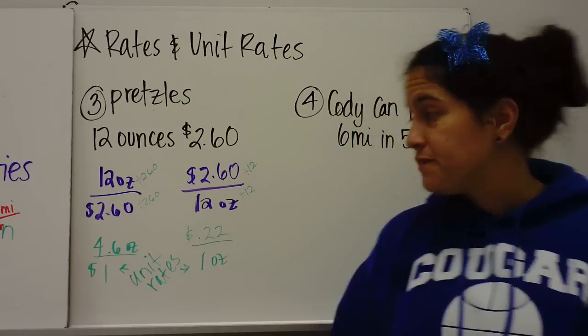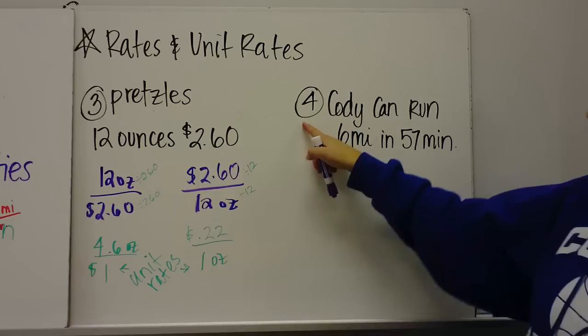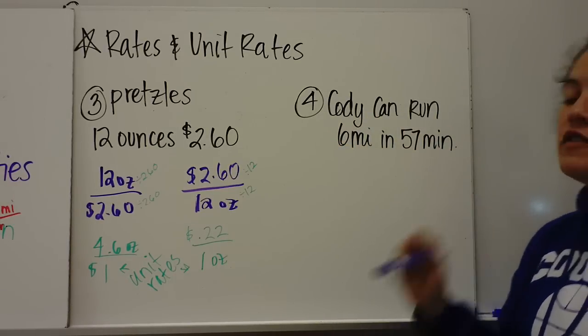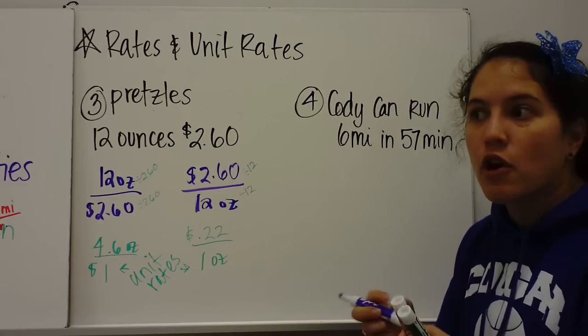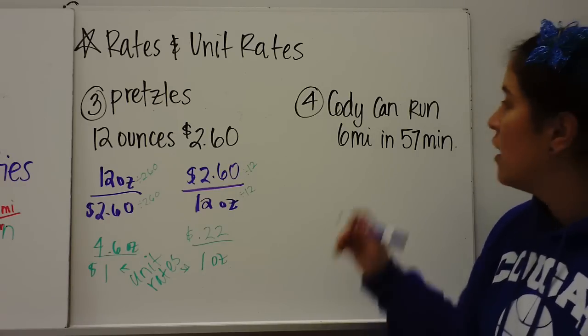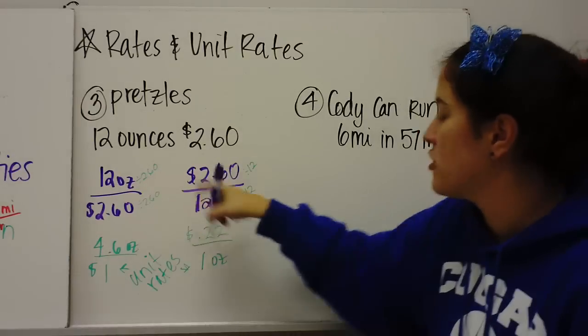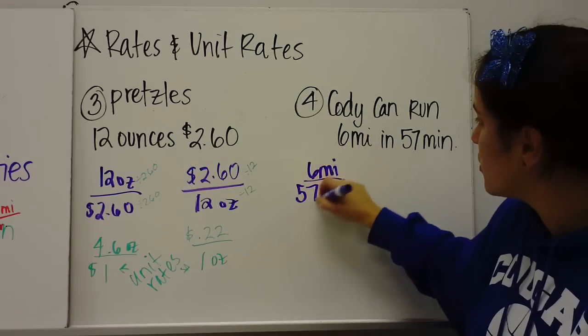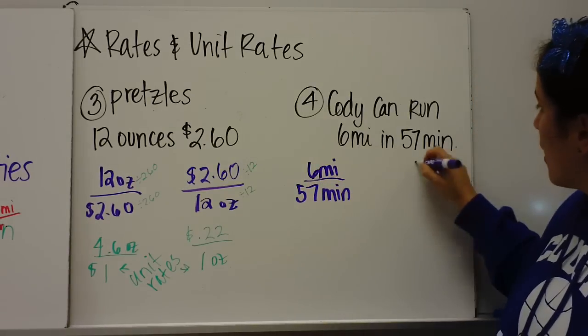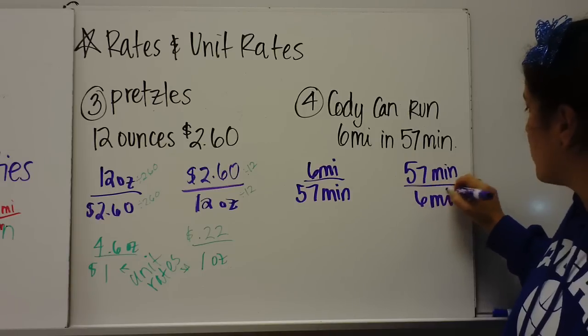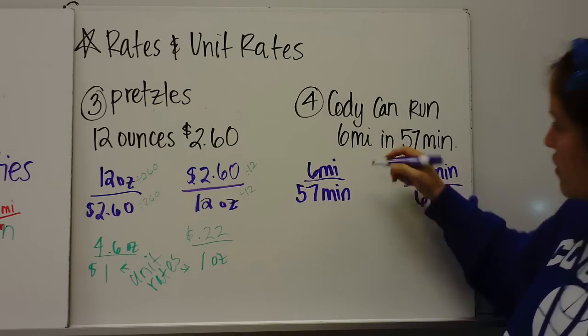All right. Let me do another example with you. 4. Cody can run 6 miles in 57 minutes. So Cody can run 6 miles in 57 minutes. I don't know if that's good or bad. So to set up a rate, we start with our ratio. 6 miles over 57 minutes and 57 minutes over 6 miles. So these are rates.